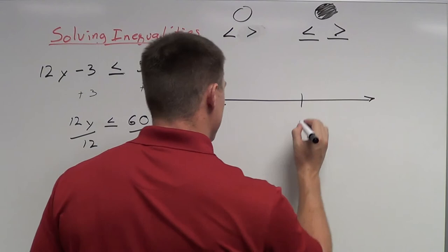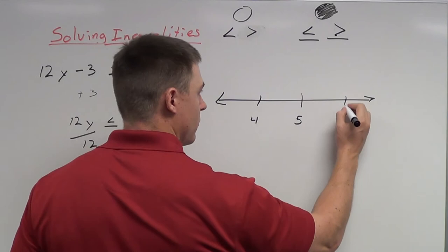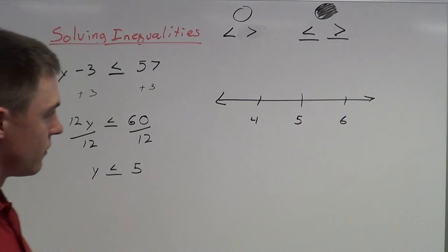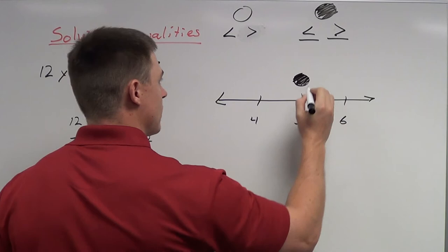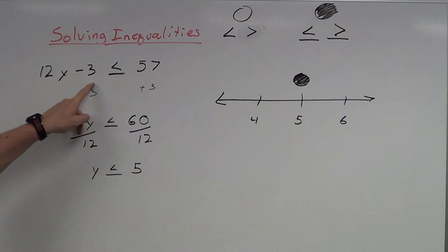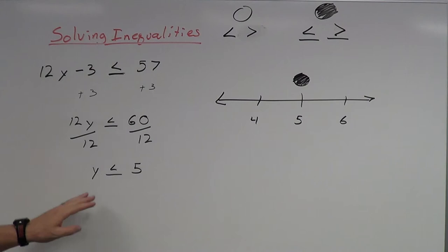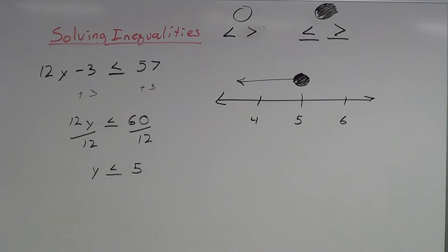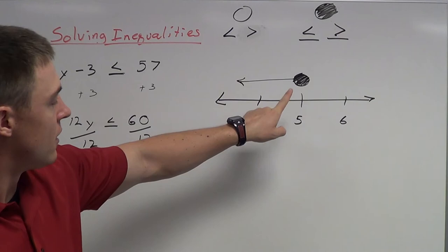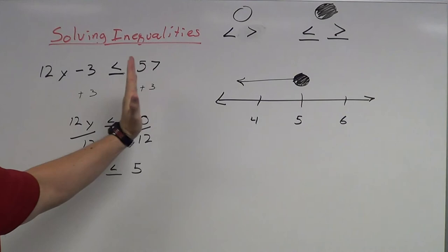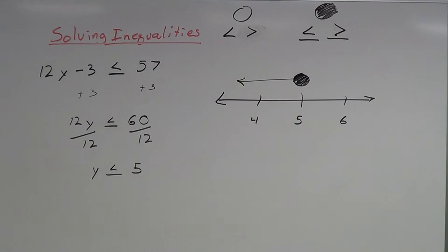Let's graph this. I'm going to make my number line with 5 right in the middle, putting 4 to the left and 6 to the right. Numbers get smaller as you go left, bigger as you go right. I'm going to use a closed circle at 5 because 5 is included — it satisfies the inequality, as shown by the 'or equal to' sign. And since all y solutions are smaller than or equal to 5, I shade in the direction of smaller numbers — all decimals, all fractions, anything less than or equal to 5 works.